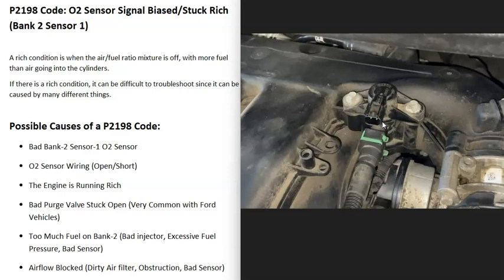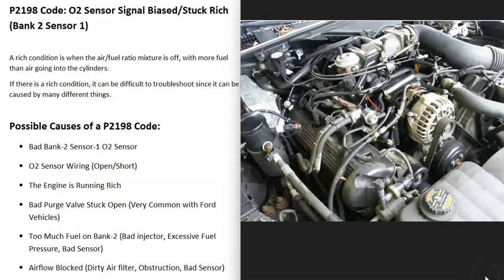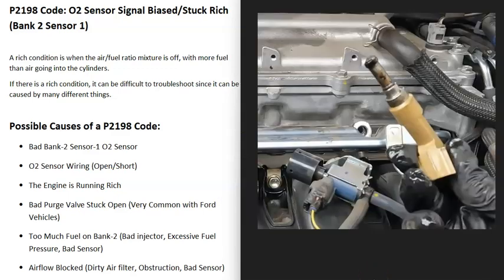The next thing that could cause a rich condition is too much fuel on Bank 2. This could be something like a bad fuel injector. If there's a bad fuel injector on Bank 2, it might be dumping more fuel than it should into a cylinder. There can also be a bad sensor causing problems with the fuel going into the cylinders on Bank 2.